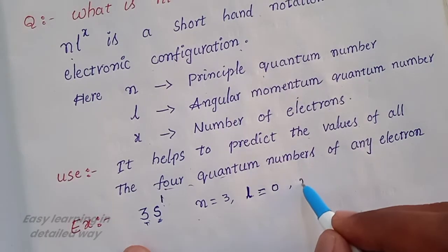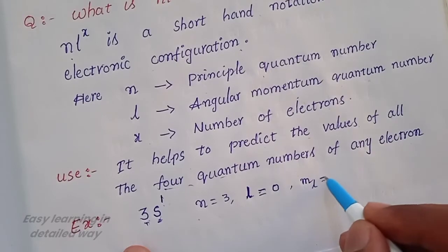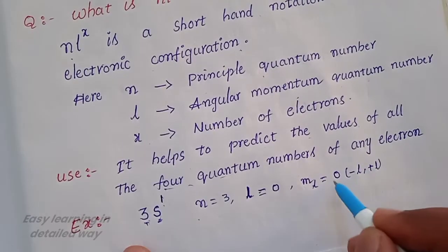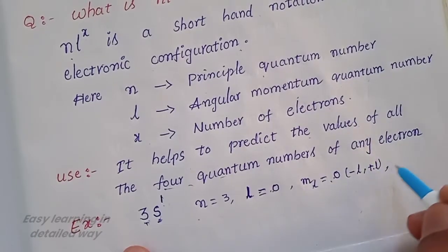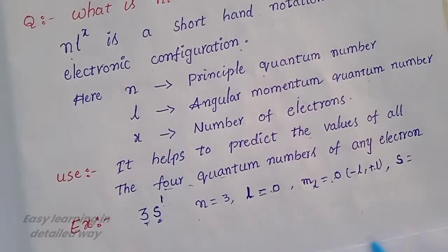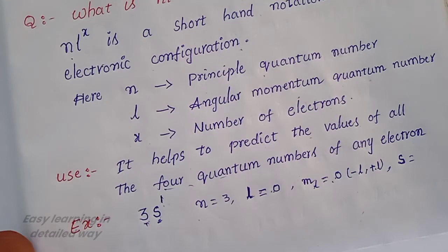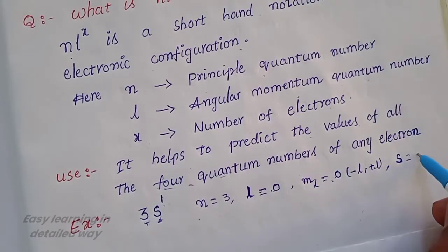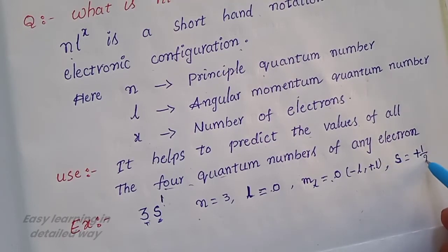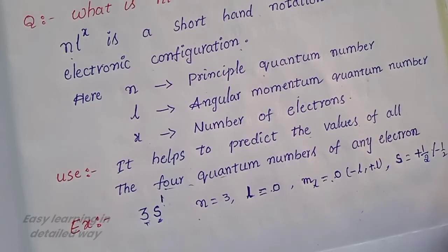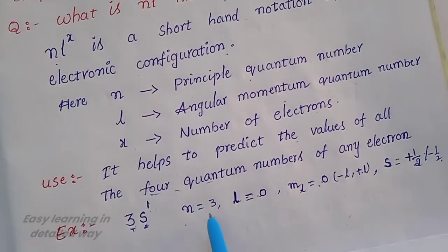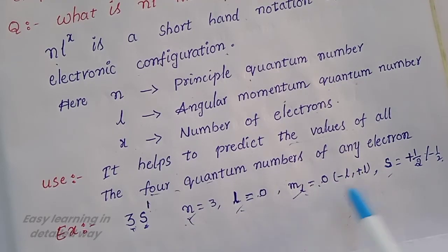You can also find the magnetic quantum number ML. Since L is 0, ML ranges from minus L to plus L, so ML is also 0. For the spin quantum number, there are two types: clockwise and anti-clockwise direction. So for one electron, the spin quantum number value is either plus half or minus half. Thus the NLX method helps predict the values of all four quantum numbers: N, L, ML and S.